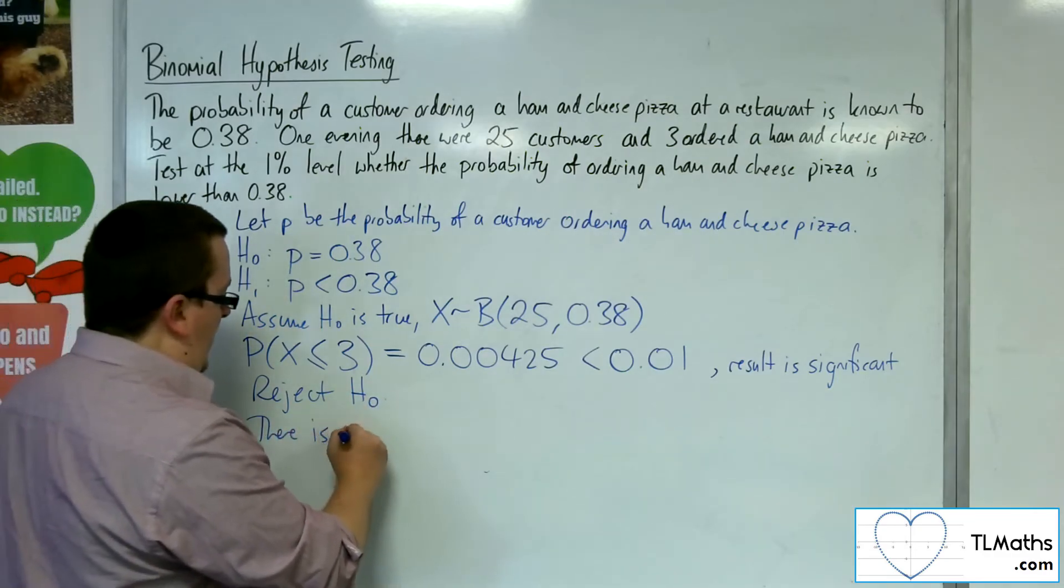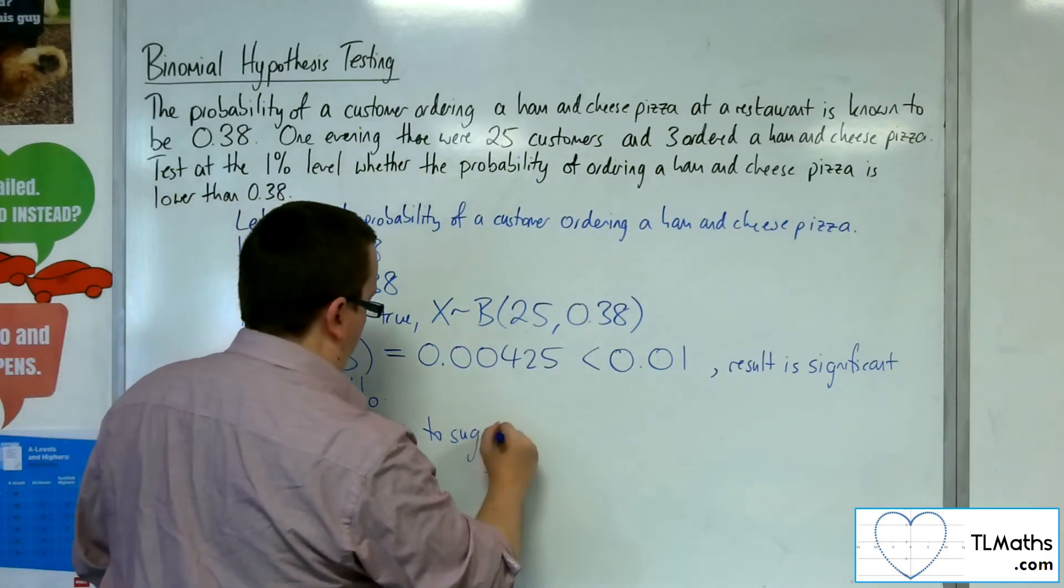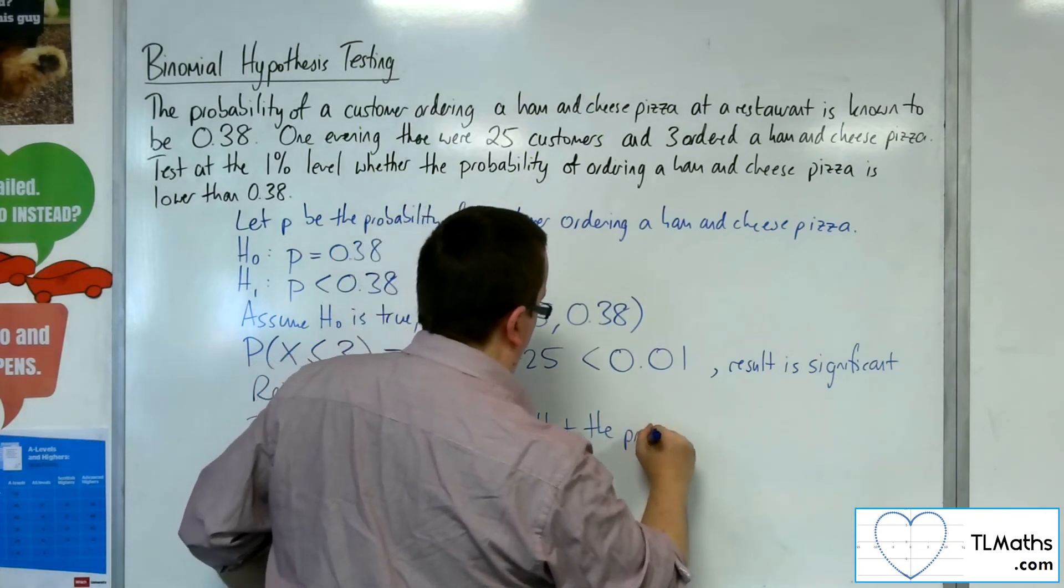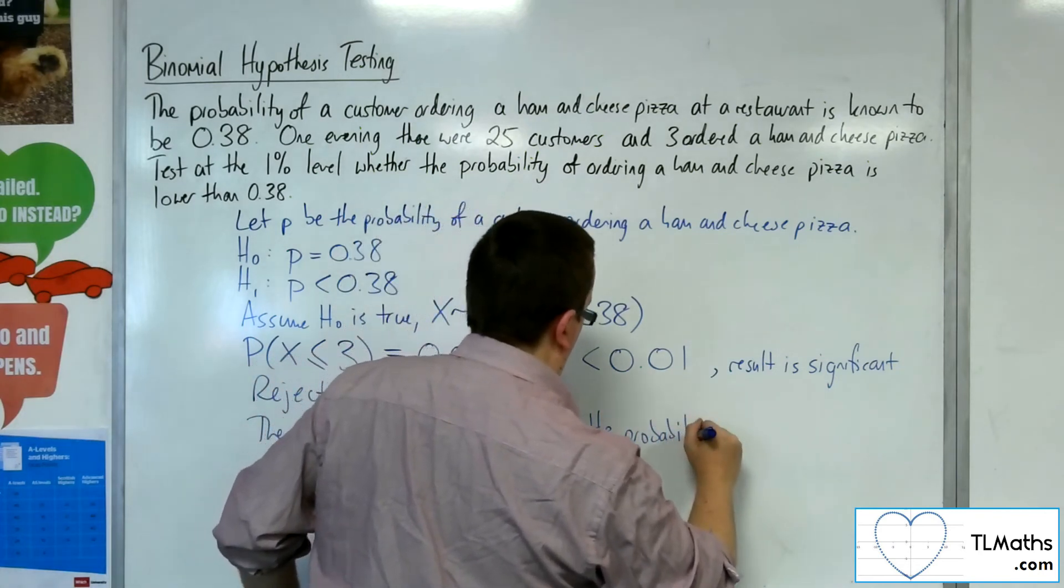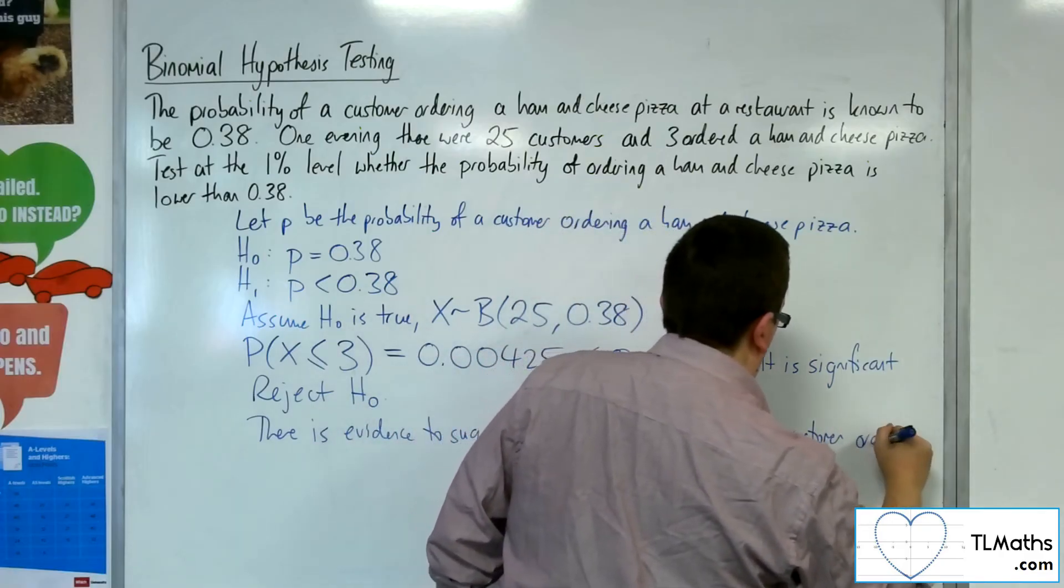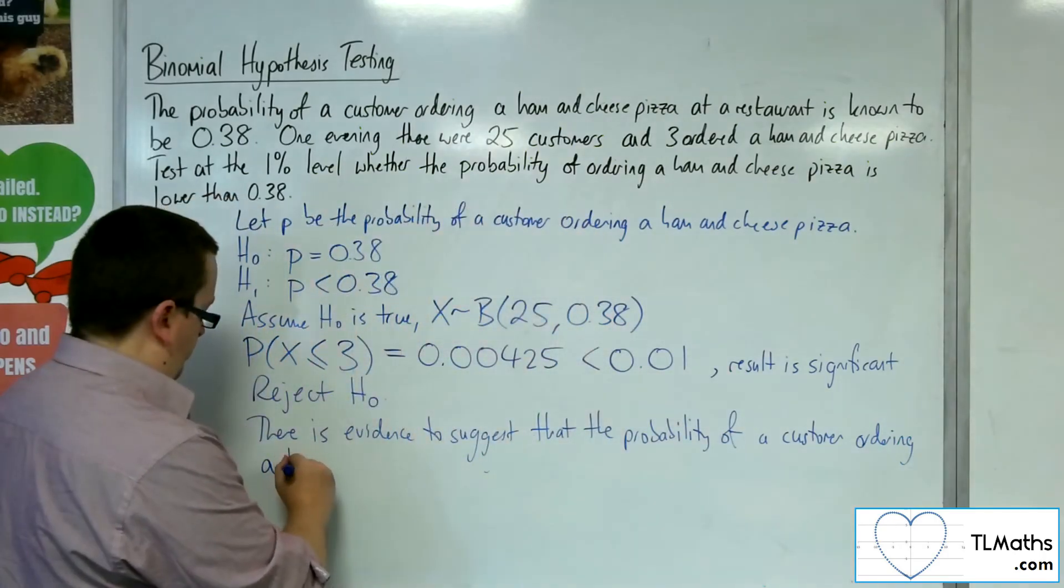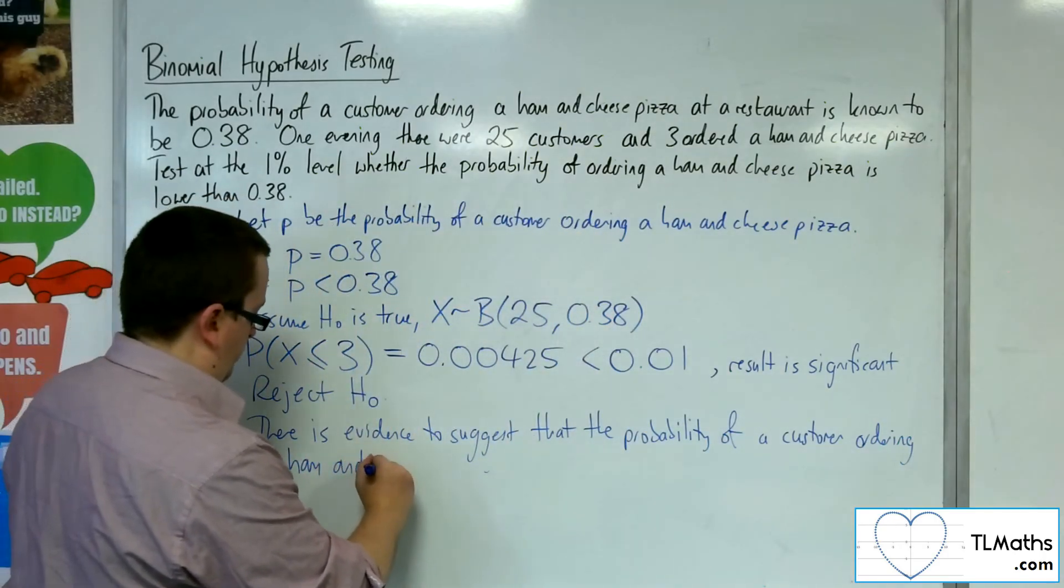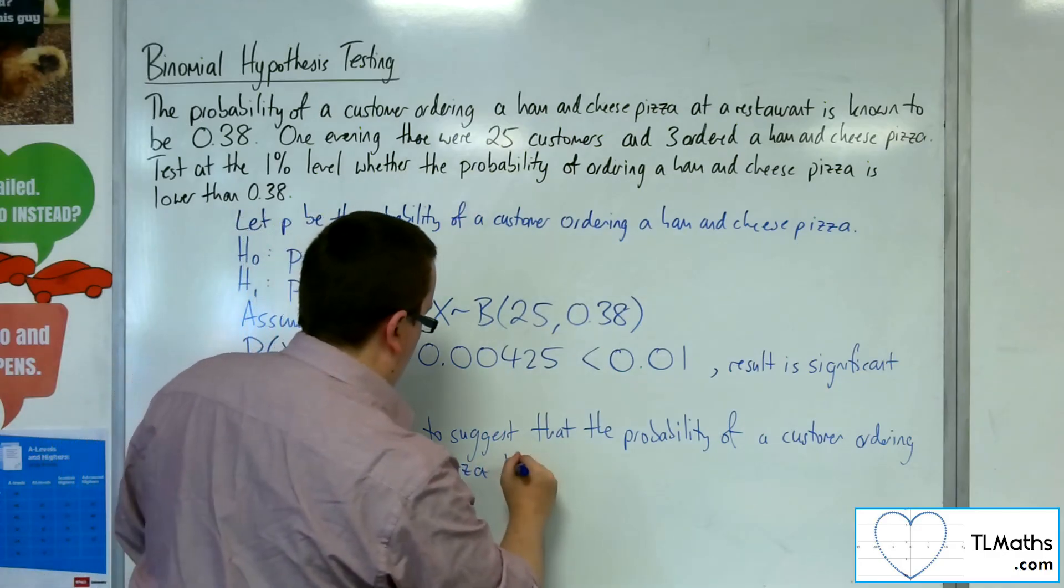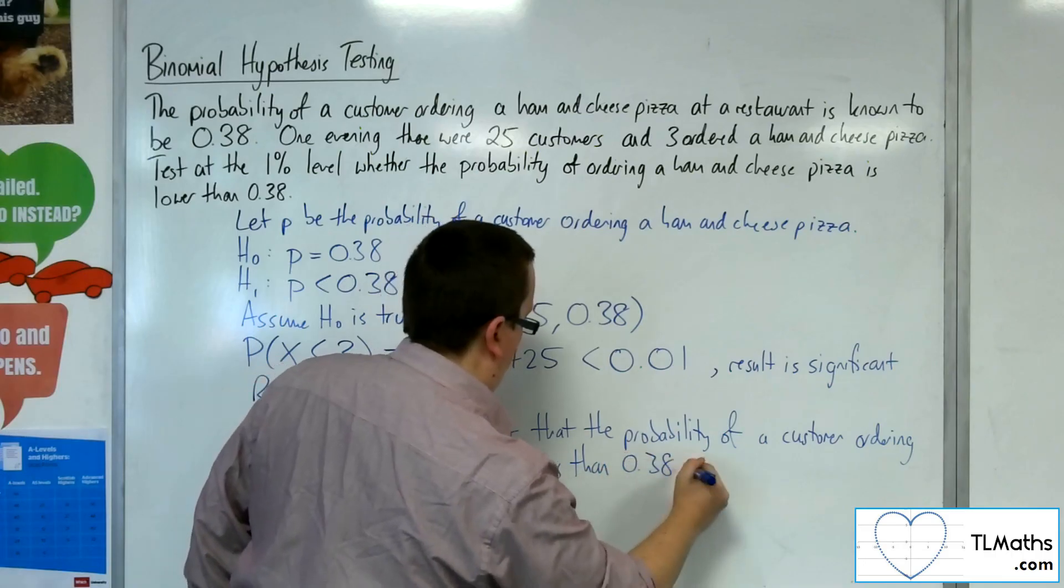And say there is evidence to suggest that the probability of a customer ordering a ham and cheese pizza is less than 0.38.